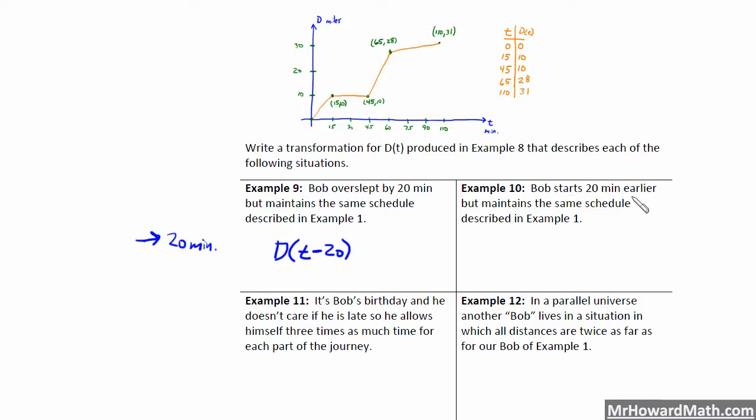Bob starts 20 minutes earlier but maintains the same schedule described in example 1. So we would have to take this full piecewise function and we're moving it to the left 20 minutes. So left 20 minutes. So to do that, it's right the opposite of what we just did. So it's D of T plus 20 would be that transformation. Okay, example 11.